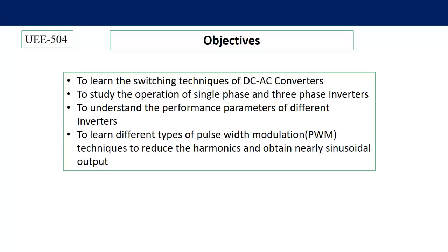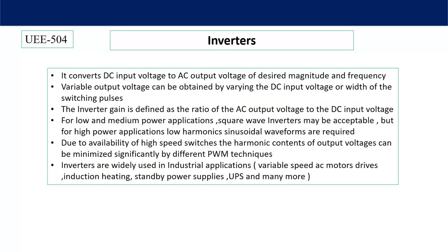We will learn different types of pulse width modulation. As we have seen in DC choppers, by changing the on-period of the switches we can control the output voltage. Likewise here, by changing the on-period of switches we can control the AC output voltage, and at the same time we can reduce the harmonic content across the output voltage.